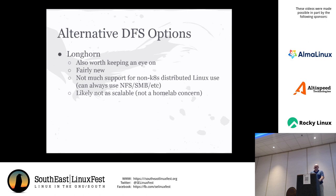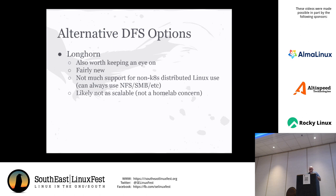Longhorn, if you're on Kubernetes, has become very popular in the last year or so. It's fairly new and immature, and pretty appropriate to the home lab scale. One gotcha is I don't know how much you can do with it outside of Kubernetes other than running a pod that gives you Samba or NFS on top of it. My guess is it will not scale as large as Ceph will - but that's not going to be a concern at home.